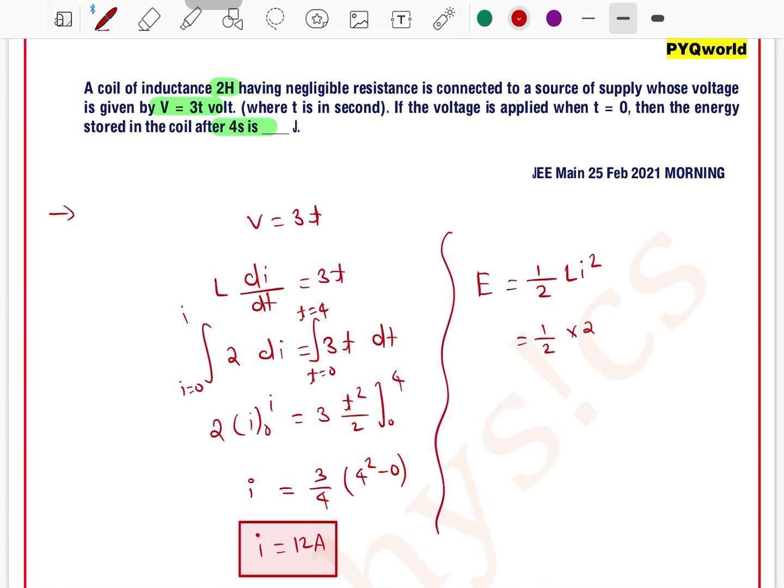...L equals 2 and I equals 12. 12 squared means 144. So this question's answer is 144 joules.